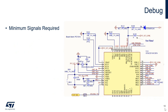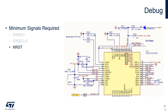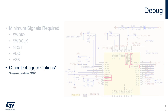At a minimum, the debug signals required are SWDIO, SWD clock, NRST, VDD, and VSS. If supported by the selected STM32, other available debugger options include SWD, JTAG, and ETM. Please verify in the selected STM32's datasheet for the list of supported debugger options.